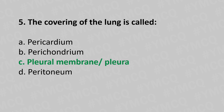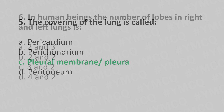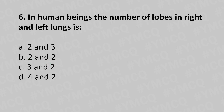Now let's move to question number six. In human beings, the number of lobes in the right and left lung is: option a, 2 and 3; option b, 2 and 2; option c, 3 and 2; option d, 4 and 2. And the answer is option c, 3 and 2.